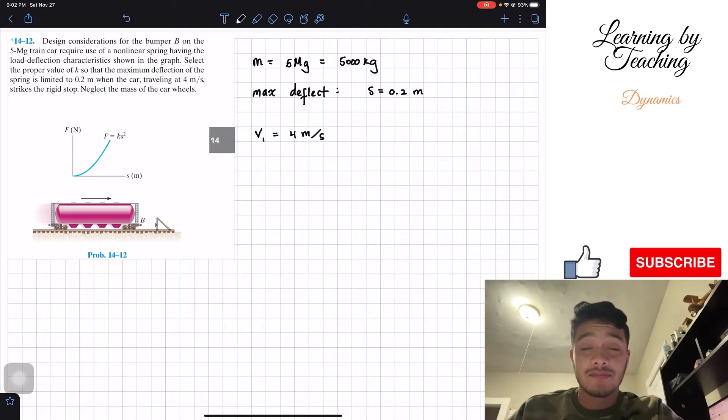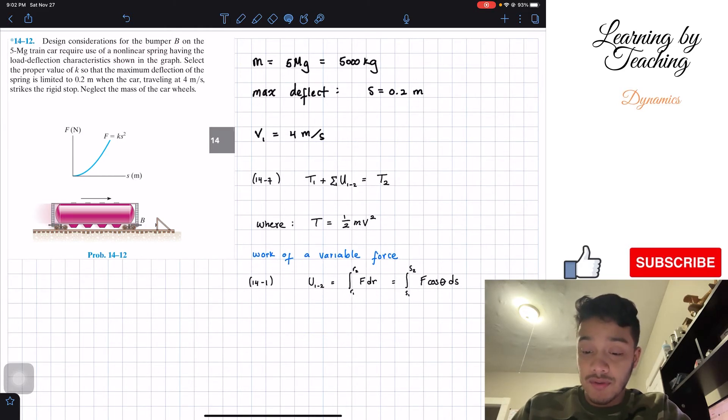Now in order to solve this problem we're going to utilize our chapter 14 equations. The ones that we're going to use is this chapter 14 with respect to our energy plus work initial, so the initial energy plus the work of our system has to be equal to our kinetic energy at the end.